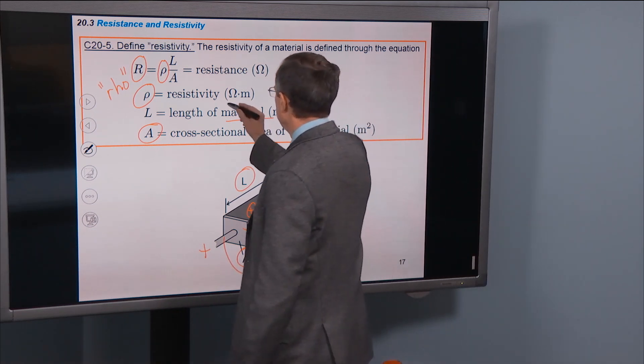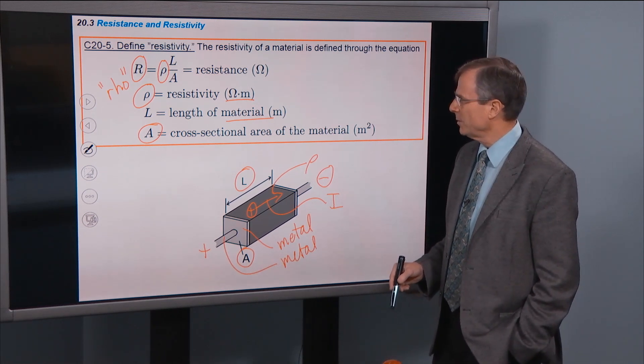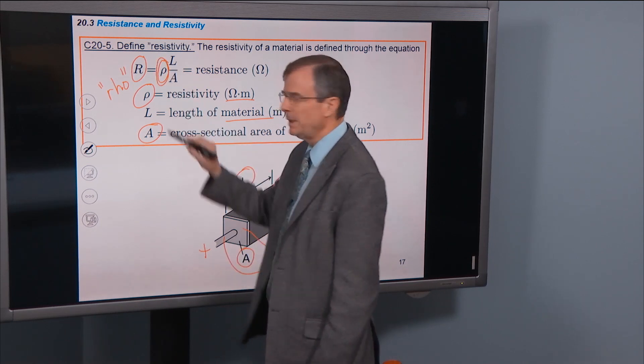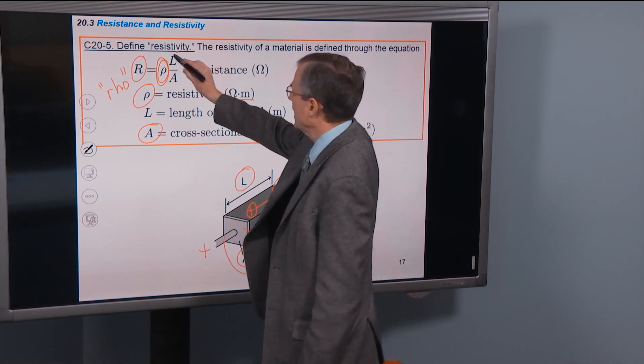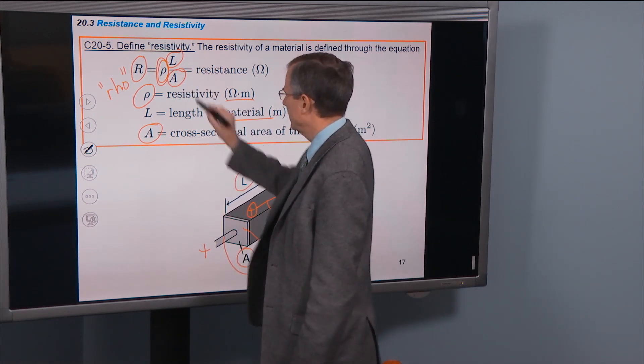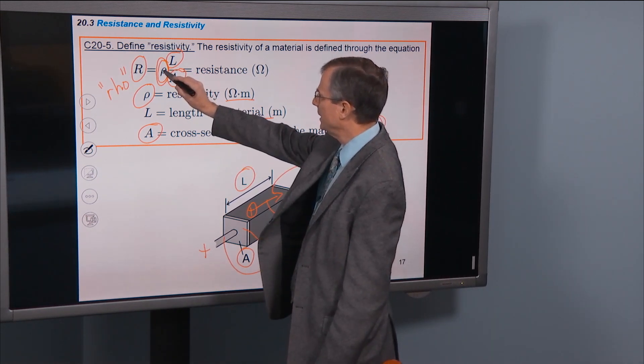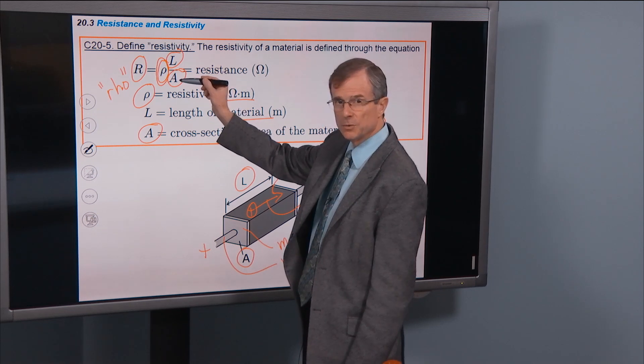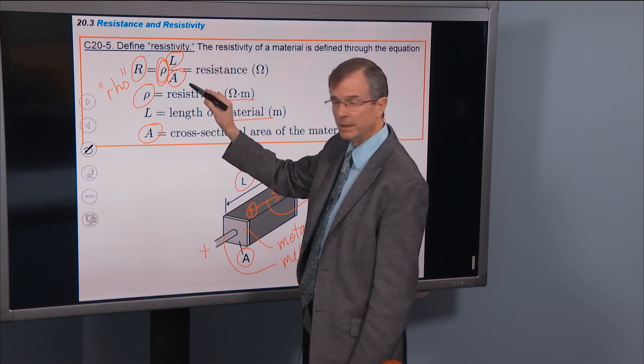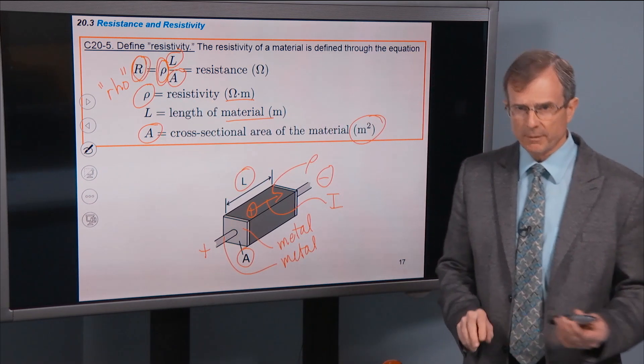And then the resistivity will be measured in units of ohm meters. How do we know that? Well if the resistivity is measured in ohm meters here, if you have a length measured in meters and an area measured in meters squared, then you have an ohm meter times another meter divided by meter squared. Well the meters up here cancel the meters down here and you get an answer that's measured in ohms. So that's how the units work out for the resistivity.